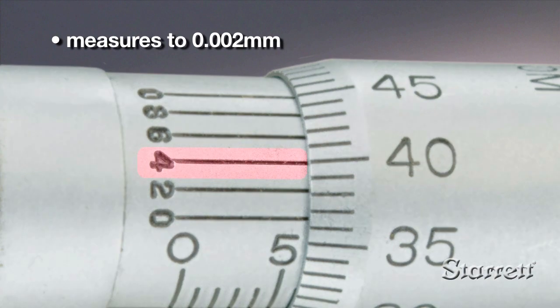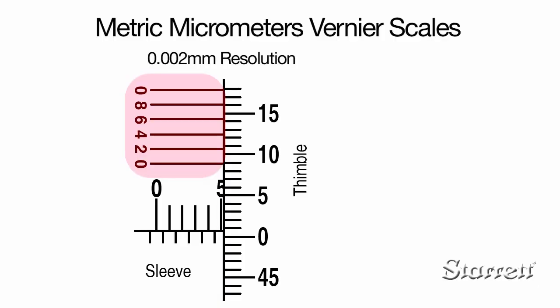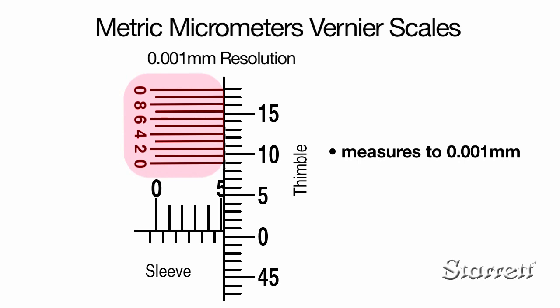Many metric micrometers have horizontal lines above the sleeve scale positioned to work with the lines on the thimble as a vernier scale. Two types are available. The first has 6 vernier lines and provides a measurement to the closest two thousandths of a millimeter. The second has 11 vernier lines and can measure to the closest one thousandth of a millimeter.